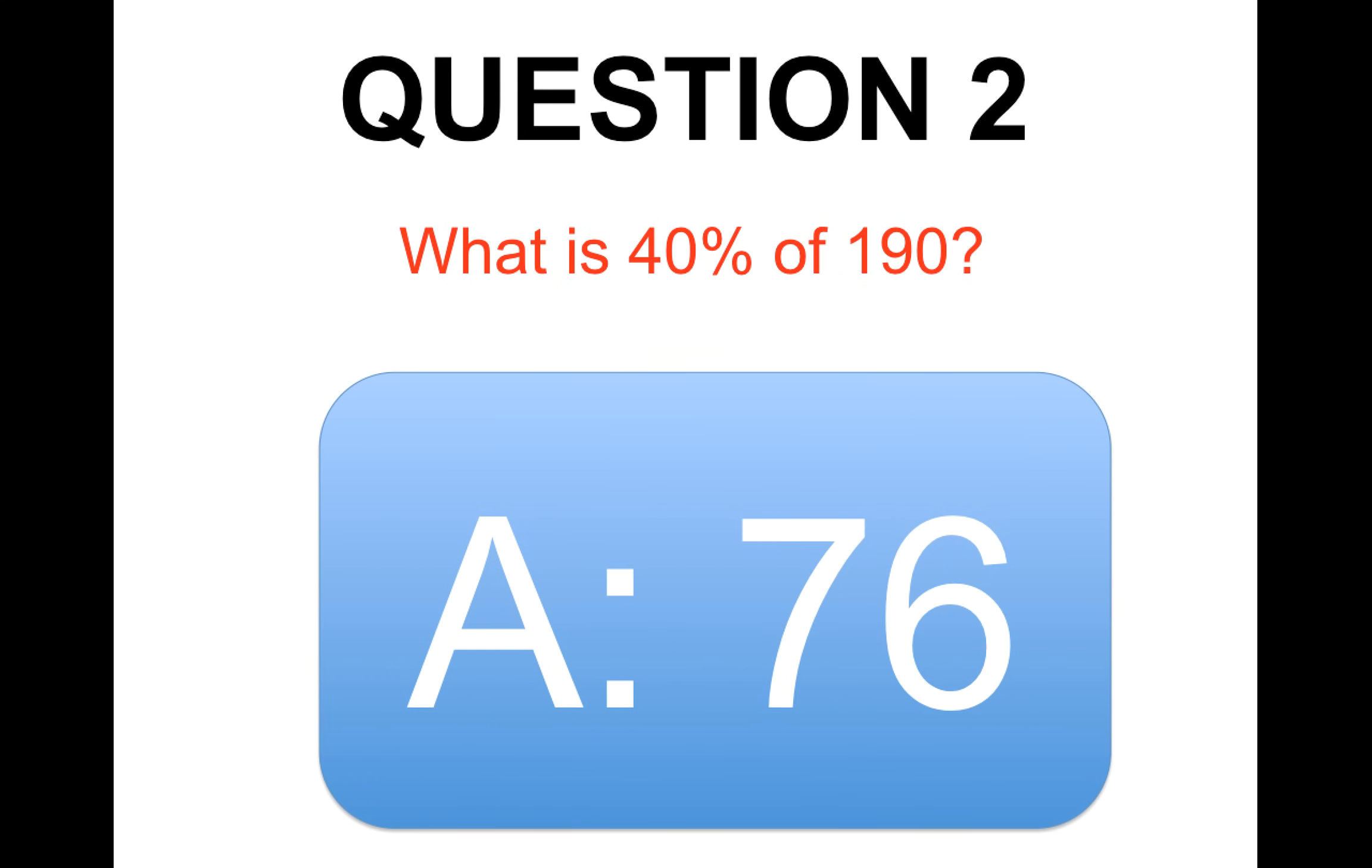Question number two. What is 40% of 190? And the answer is 76. So the best way to work that out is work out what's 10% of 190 which is 19 and then multiply that by 4. And that will give you the answer 76.